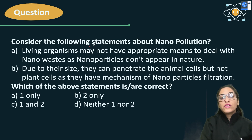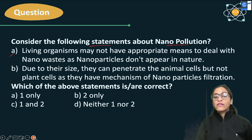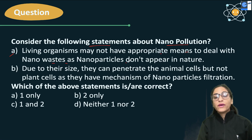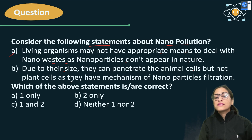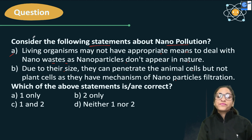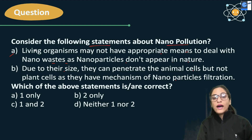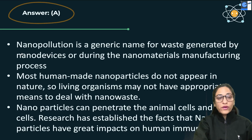Next, consider the following statements about nanopollution. Statement 1: Living organisms may not have appropriate means to deal with nano waste, as nanoparticles don't appear in nature. Statement 2: Due to their size, they can penetrate animal cells but not plant cells, as plant cells have a mechanism for nanoparticle filtration. Pause and answer. The answer is A — only statement 1 is correct.